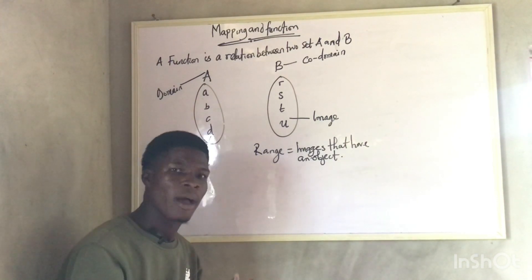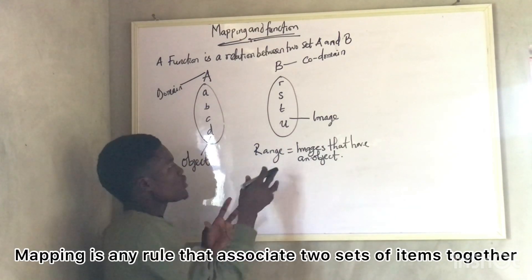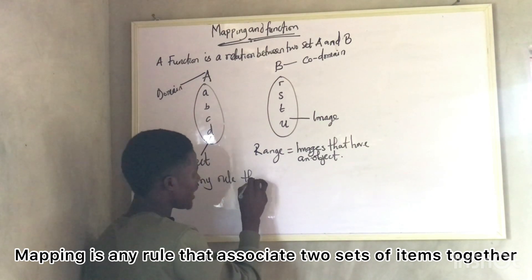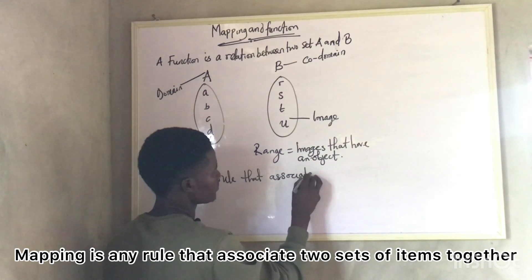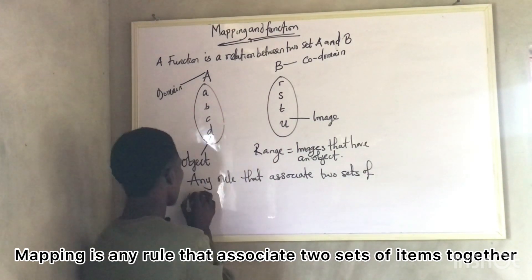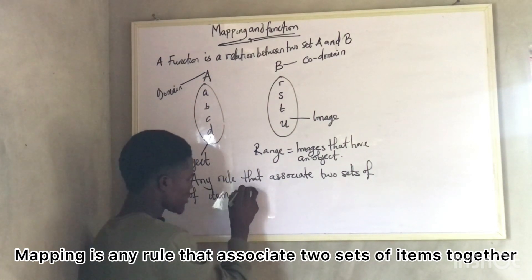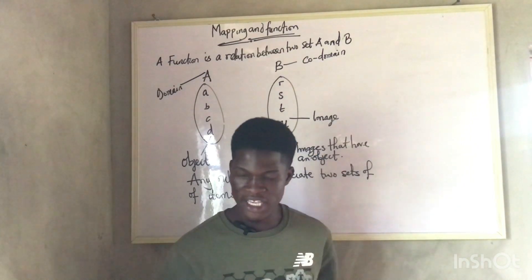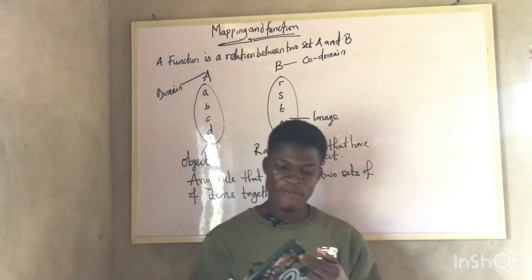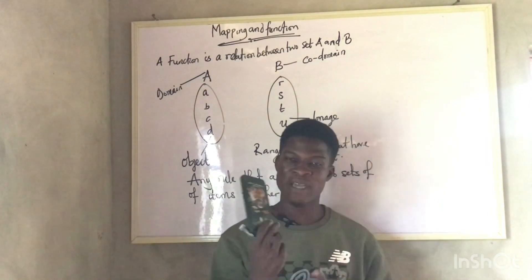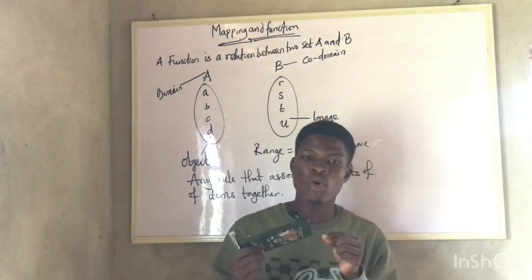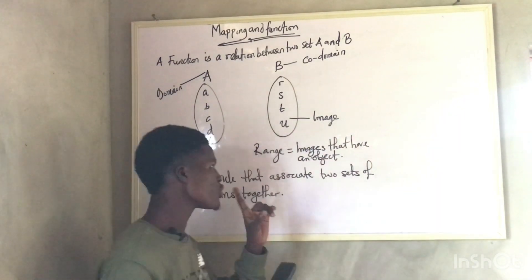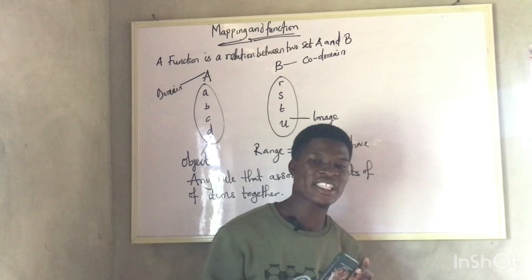Now, what is mapping? Mapping is any rule that associates two sets of items together. Just like I have a phone and a power bank — let's say I have this phone and another power bank. If I am to connect my phone to a power bank, my phone is a function, my power bank is also another function, and the one thing that will connect my phone to my power bank is what we call the cord. That cord in mathematics is what we refer to as mapping, because without the cord there will be nothing connecting my phone and my power bank together.